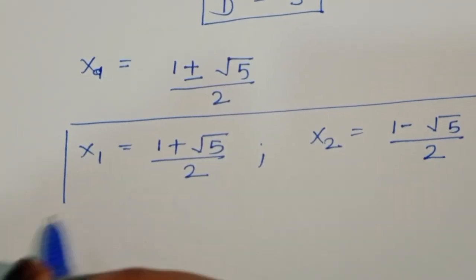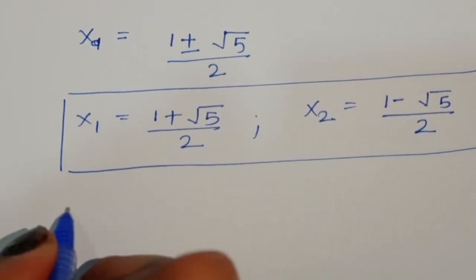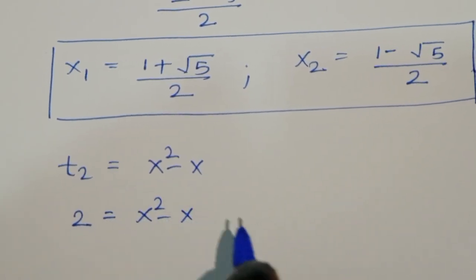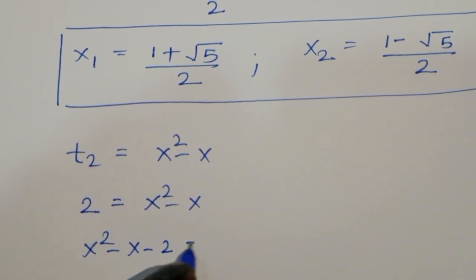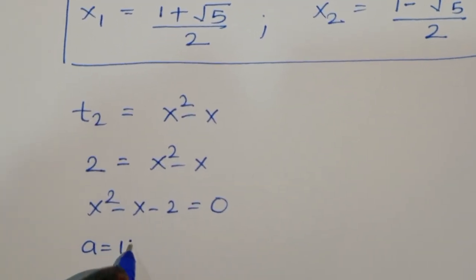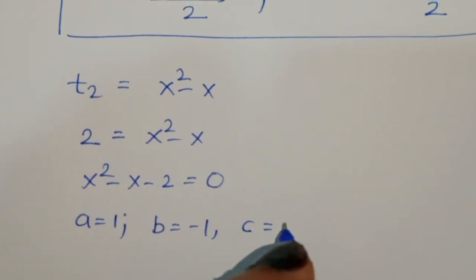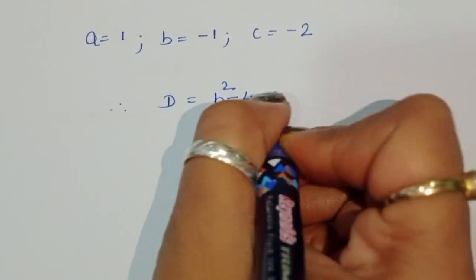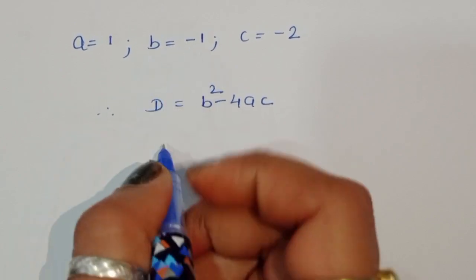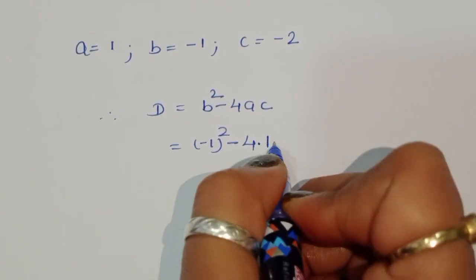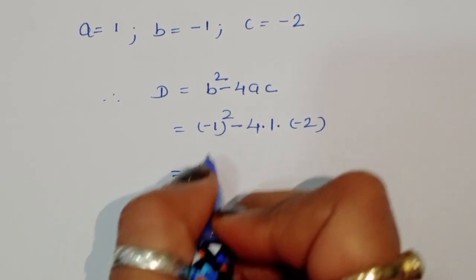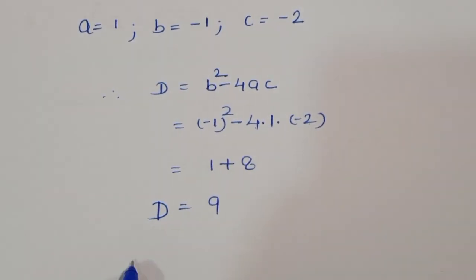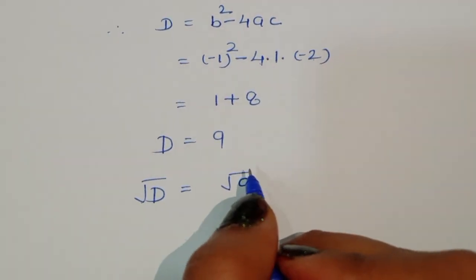So x1 equals 1 plus root 5 divided by 2, and x2 equals 1 minus root 5 divided by 2. From Case 2 with t2: x squared minus x equals 2, giving x squared minus x minus 2 equals 0. Here a equals 1, b equals minus 1, c equals minus 2.